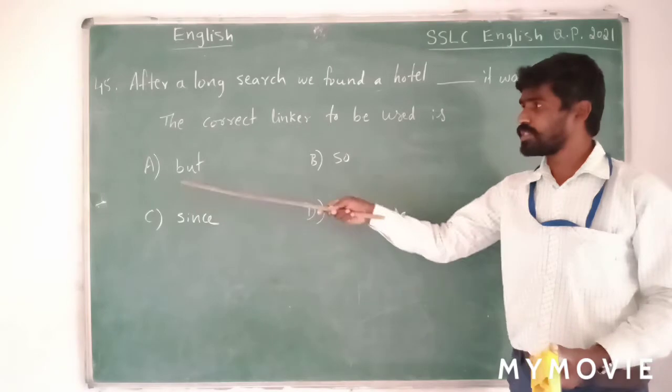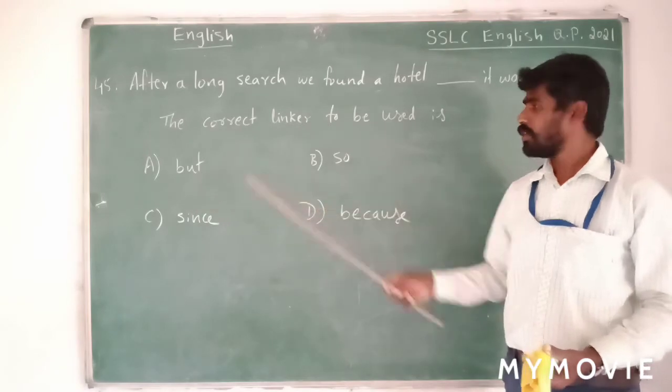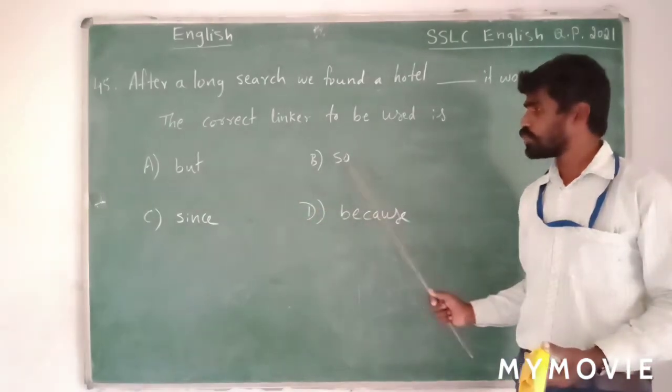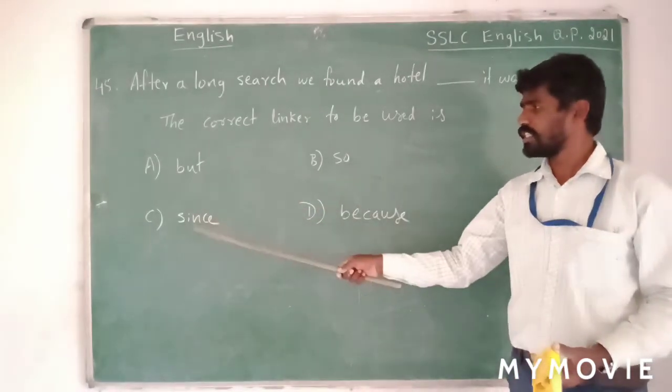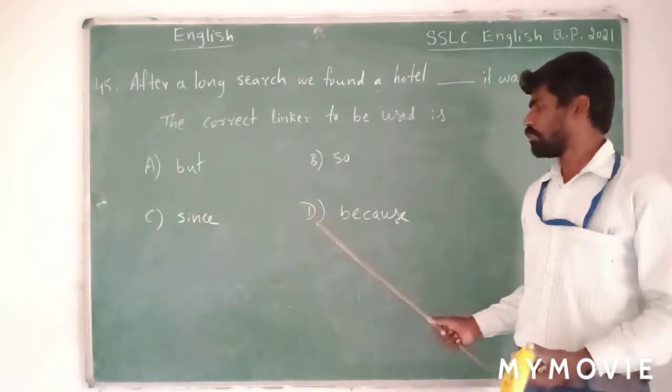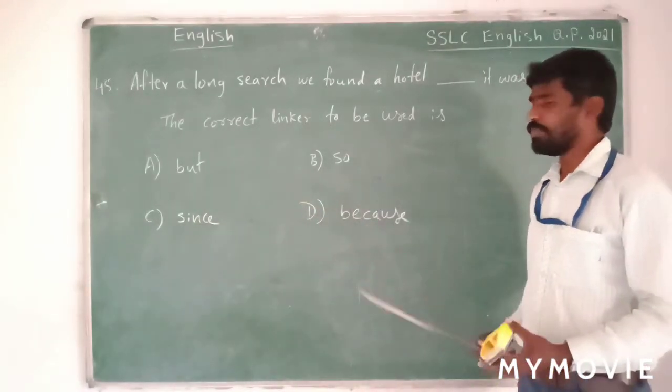They have given four linkers. Option A: but. Option B: so. Option C: since. Option D: because.